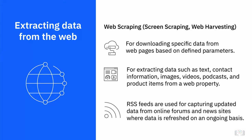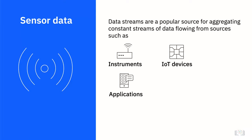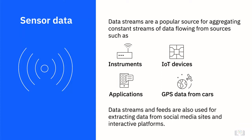RSS feeds are another source typically used for capturing updated data from online forums and news sites, where data is refreshed on an ongoing basis. Data streams are a popular source for aggregating constant streams of data flowing from sources such as instruments, IoT devices and applications, and GPS data from cars. Data streams and feeds are also used for extracting data from social media sites and interactive platforms.